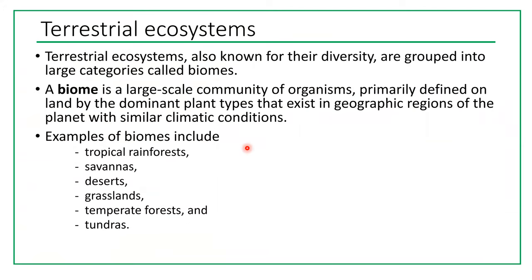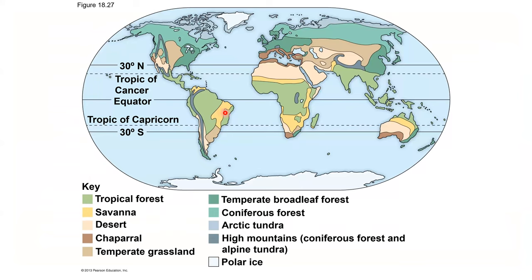Terrestrial ecosystems, also known for their biodiversity, are grouped into large categories called biomes. A biome is a large-scale community of organisms, primarily defined on land by the dominant plant type that exists in a geographic region with similar climatic conditions. Places with similar climates will have similar biomes. Examples of biomes include tropical rainforests, savannas, deserts, grasslands, temperate forests, and tundra.